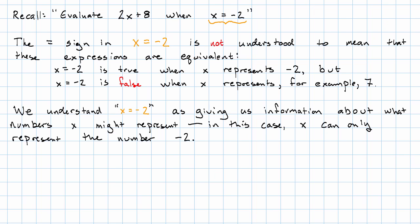X equals -2 is a very simple example of what we're going to call an equation. An equation is a sentence that states that two expressions are equal. Typically, when we see an equation, it might be true or false depending on the values of the variables.